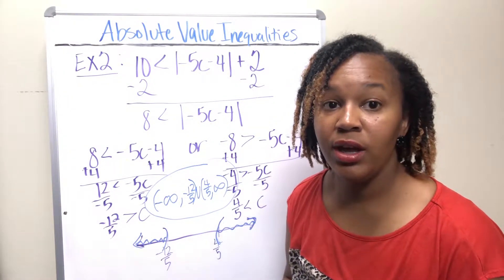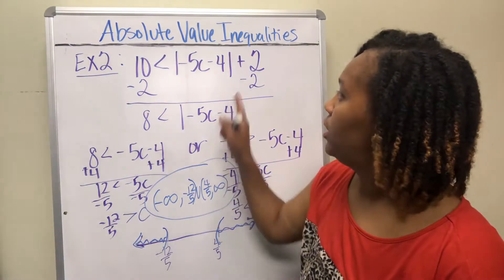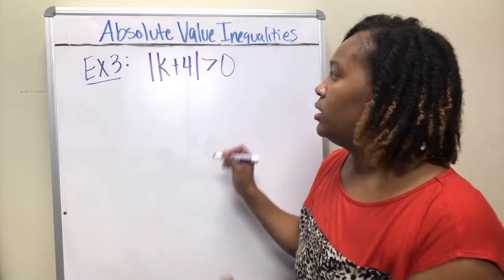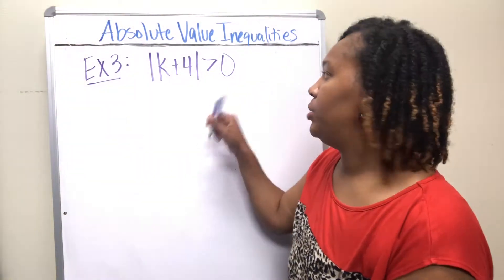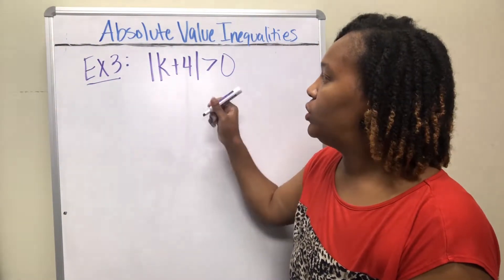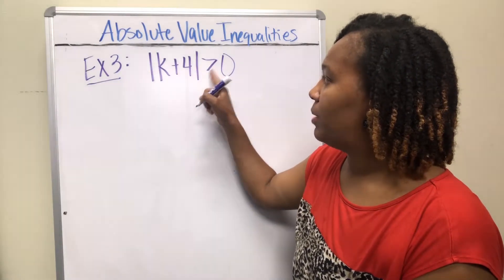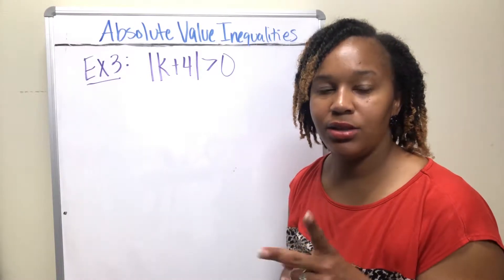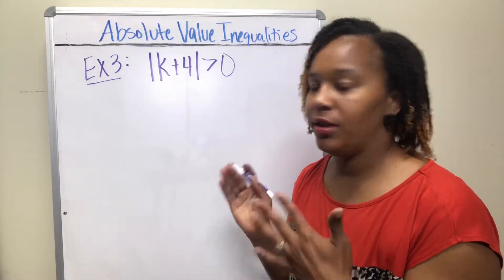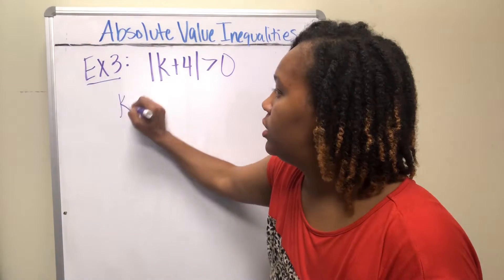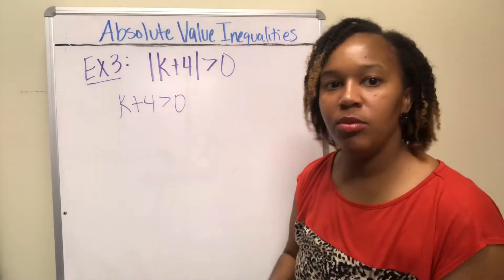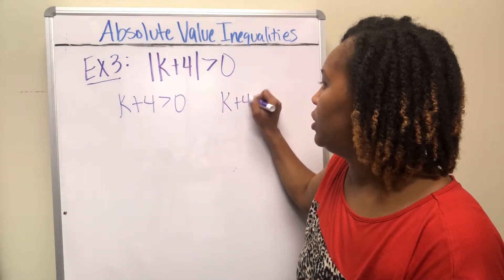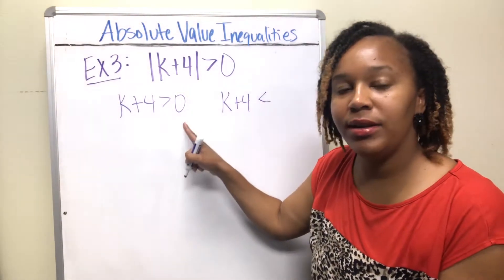Example three: solve |k + 4| > 0. The absolute value is bigger than a number, so this is case two — create a compound inequality. Drop the absolute value bars for the first part; for the second, change the direction of the inequality and change the sign on the number. Note that negative zero is still just zero.